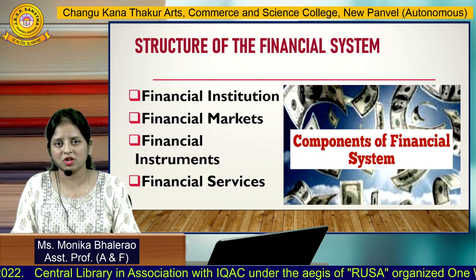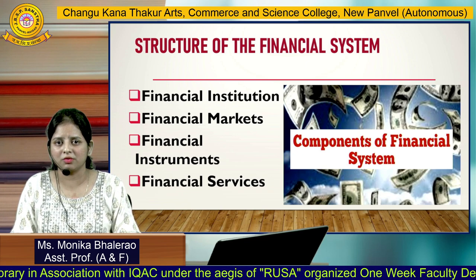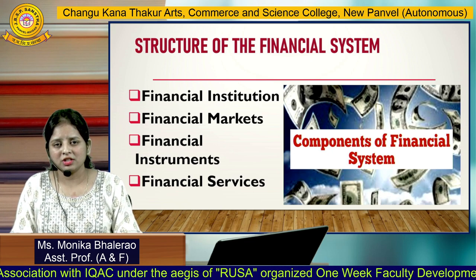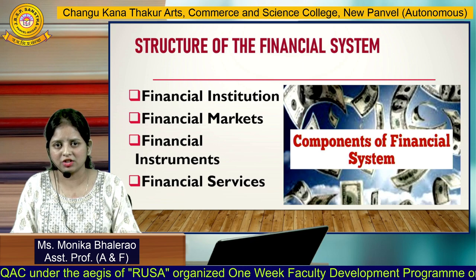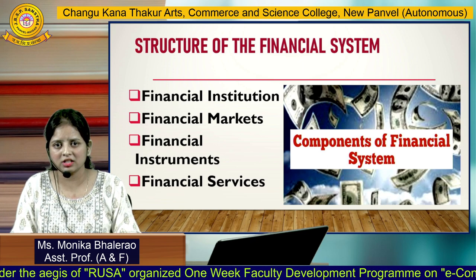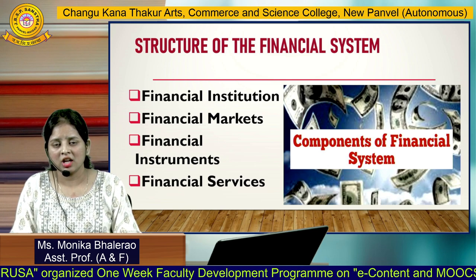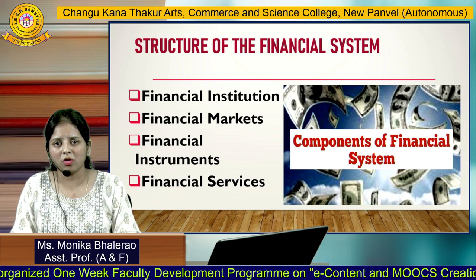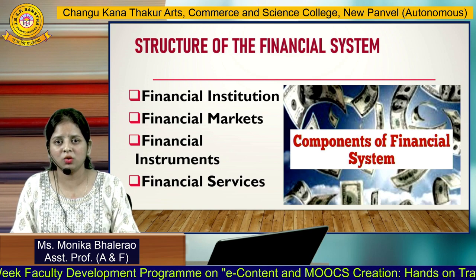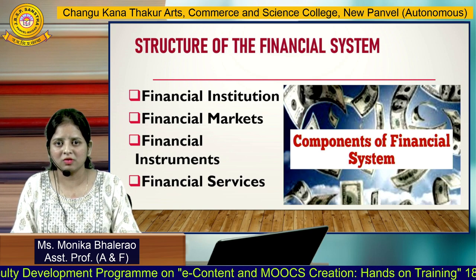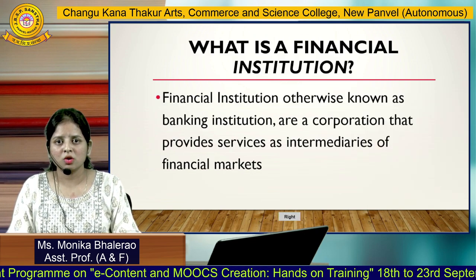Now we are moving to the next part — the structure, or you can say the components, of the financial system. The financial system is basically divided into four parts: financial institutions, financial markets, financial instruments, and financial services. These are the four most important components of the financial system, and we will study each one by one.